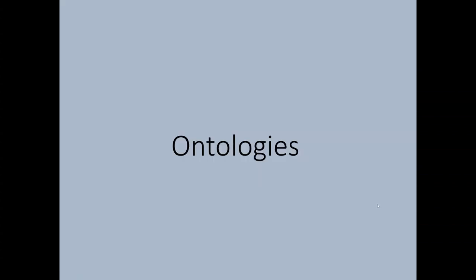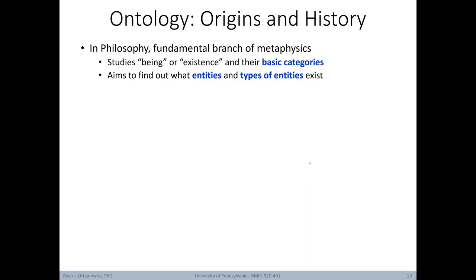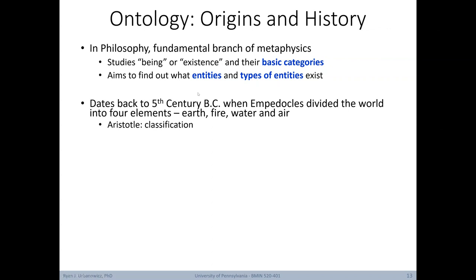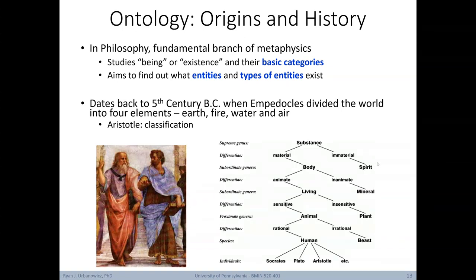Now let's shift gears and focus on ontologies. Let's briefly start by examining their origins. In philosophy, there's a fundamental branch of metaphysics that studies being or existence and their basic categories. It aims to find out what entities and types of entities exist. One could say that the idea of an ontology dates back to the 5th century BC when Empedocles divided the world into four basic elements: earth, fire, water, and air. Aristotle expanded on this idea towards trying to classify the components of life. Here we see an early idea to break down the connections between spirit, mineral, plant, beast, and human.